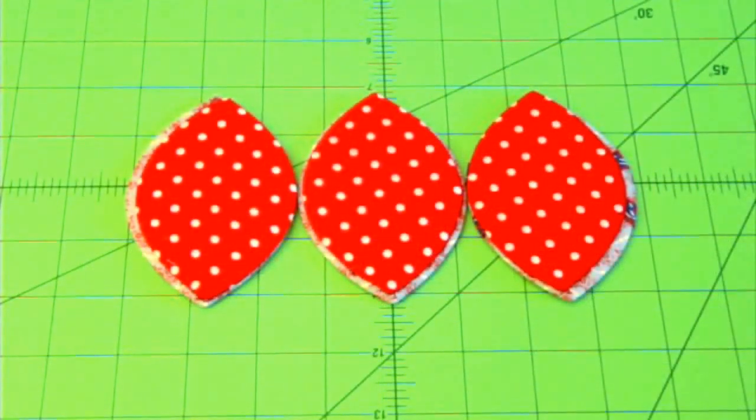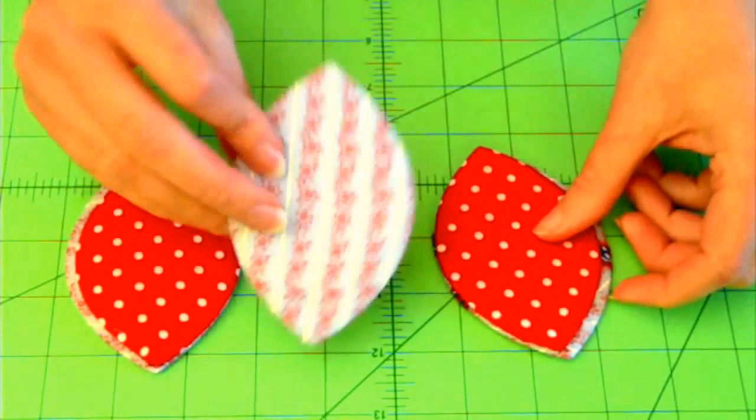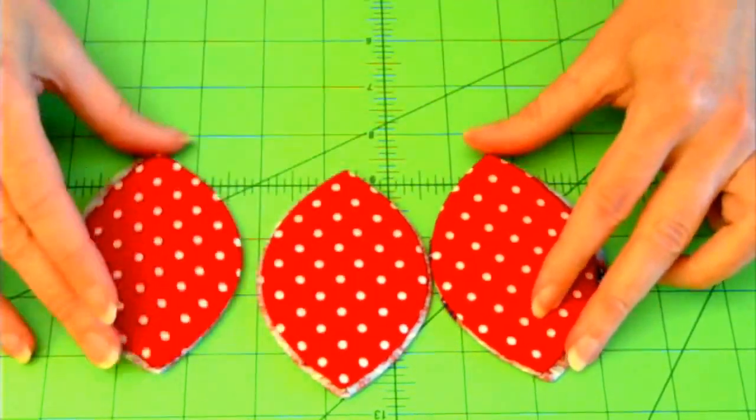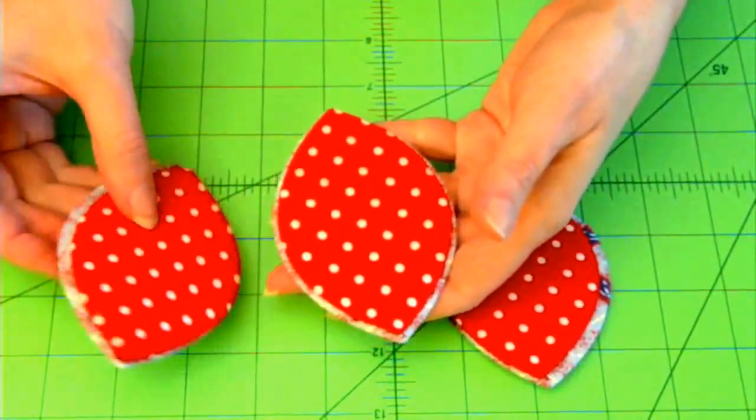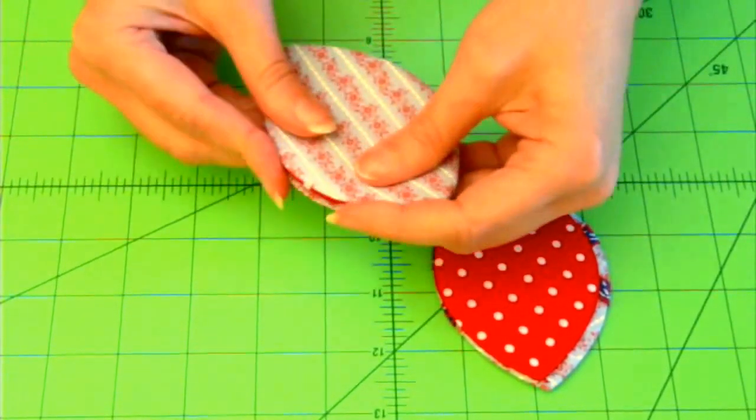So here are my three completed pairs. And on this one, I have a little trim. Now I'm going to put these together into the case. So I'm going to start by putting one side and the bottom edge to edge.